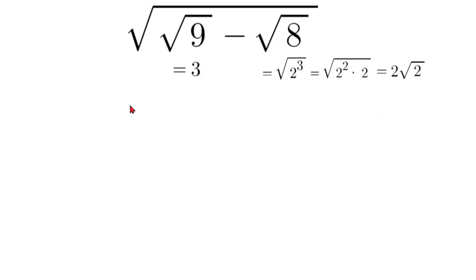Now let's rewrite this square root with our new values inside of it. So we'll have square root of 3 minus 2 square root of 2.